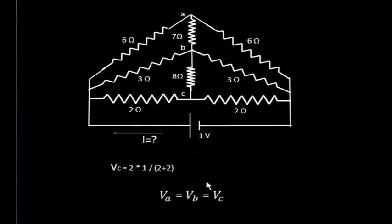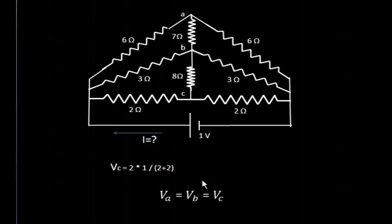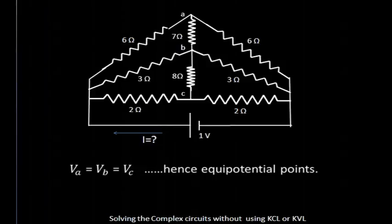When these are identical, by the voltage division rule, we know that the potential at point C will be Vc = (2 × 1) / (2 + 2), where 2 is the resistance value and 1 is the voltage source. So Vc can be found out very easily. Similarly, with the same formula of voltage division rule, we can find out the voltage at Vb and at point A. The voltage comes out to be equal — 1/2 volt, that is 2 × 1 / 4 = 1/2 volt. So all three voltages Va, Vb, Vc are equal, and hence these points are called equipotential points.